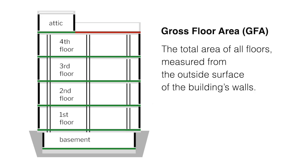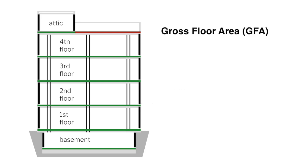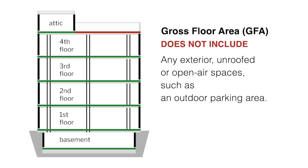Gross Floor Area: the gross floor area, or GFA, of a building is the total area of all floors, measured from the outside surface of the building's walls. This area also includes hallways and common areas, atriums, elevator shafts, mechanical equipment areas, and storage rooms. The gross floor area does not include any exterior, unroofed, or open air spaces, such as an outdoor parking area.